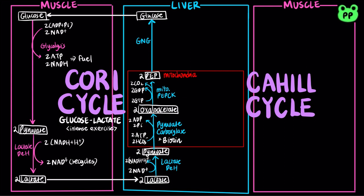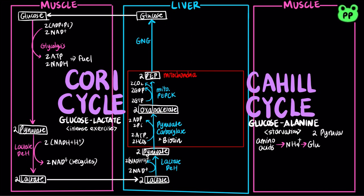The glucose-alanine cycle is involved in transporting amino groups to the liver in a non-toxic form. During starvation, muscles degrade amino acids for fuel. Amino groups are collected in the form of glutamate by transamination. Glutamate then transfers its alpha amino group to pyruvate by alanine aminotransferase.